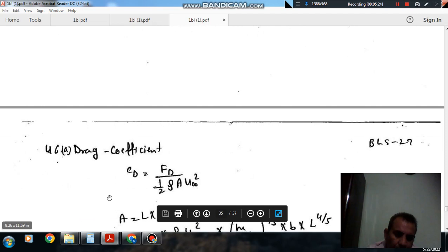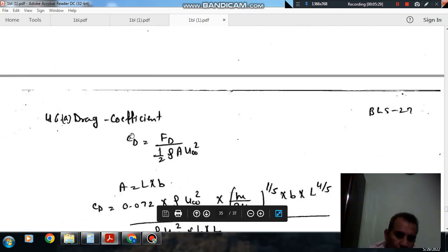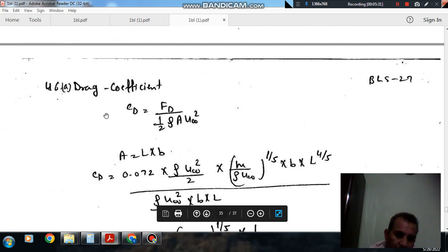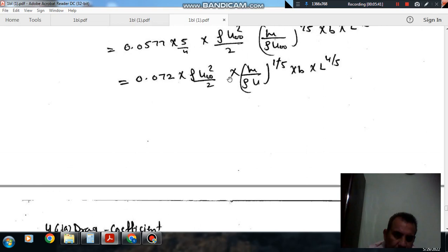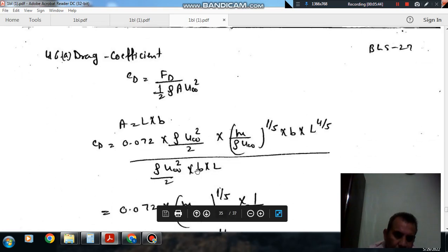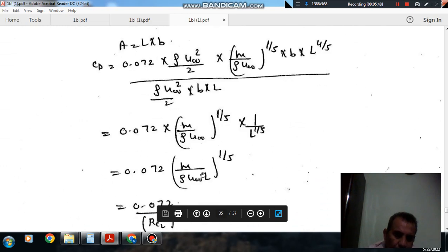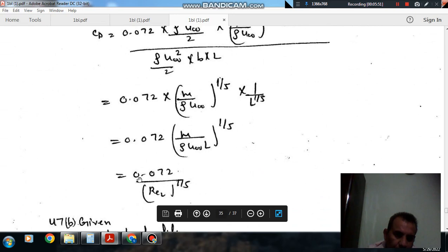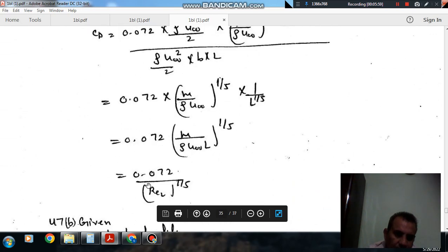And the drag coefficient, c_d equals F_D divided by half rho A u_infinity squared. Here A is L times b, and F_D is this quantity. Putting the value, these will be 0.072 Re^(-1/5), so that is your c_d.